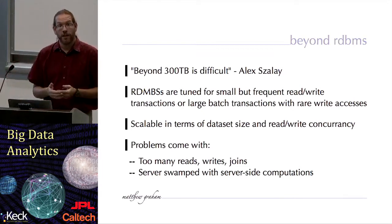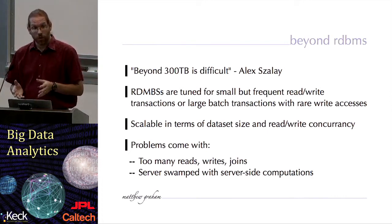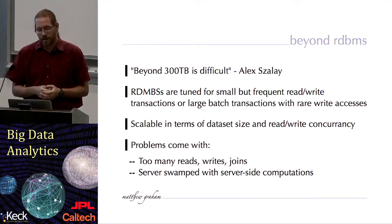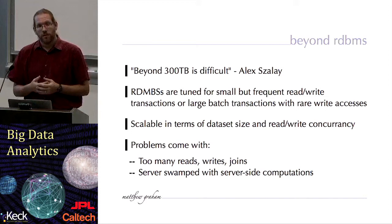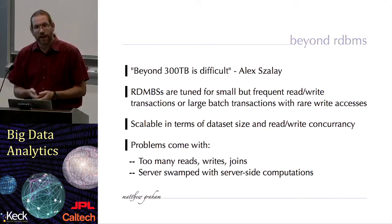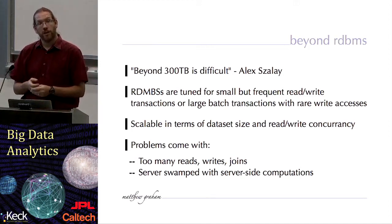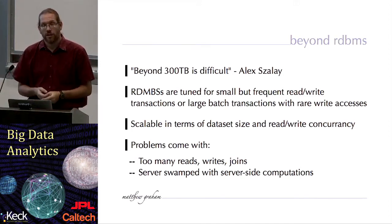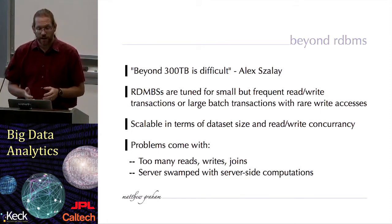If you have too many joins going on because of the way you've structured your database — particularly if you've normalized it, because that encourages joins — that can cause performance issues and queries begin to become slower. Also, if you are doing a lot of complex queries making use of stored procedures and possibly views, where there's a lot of server-side computation required, then you can find performance problems with a relational database.